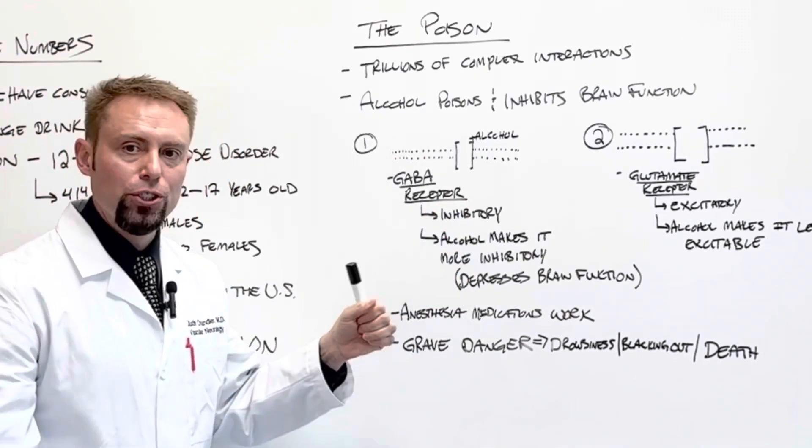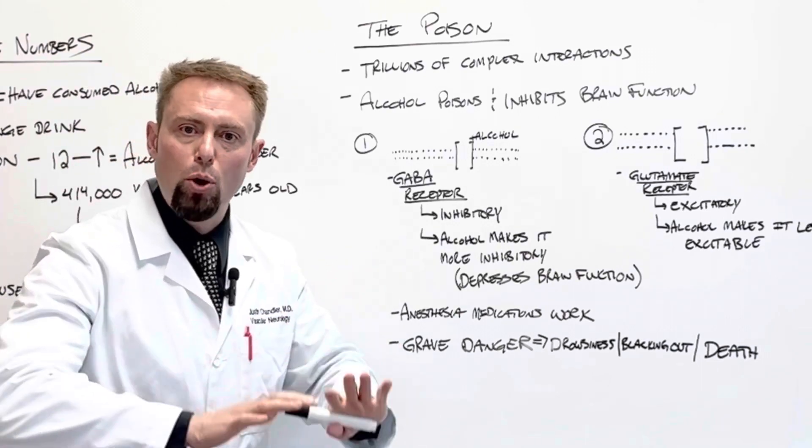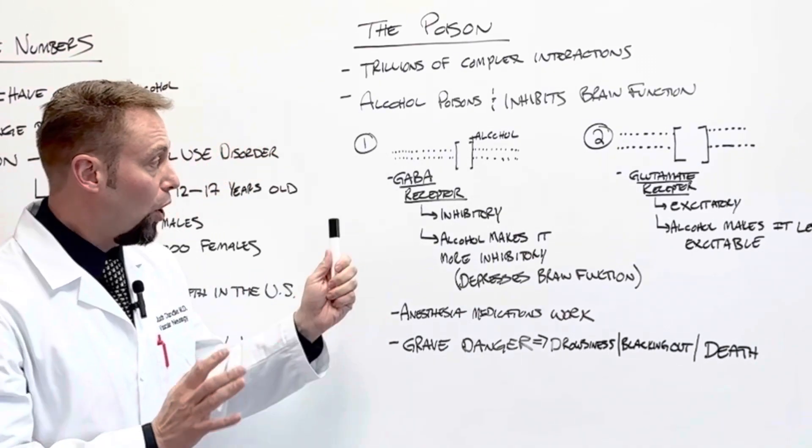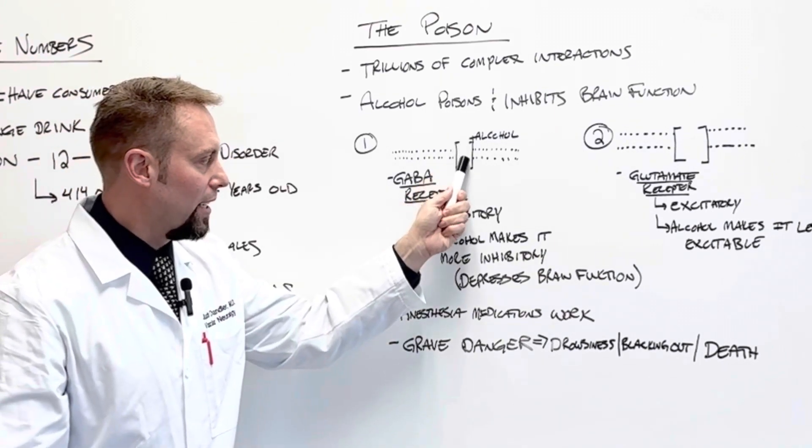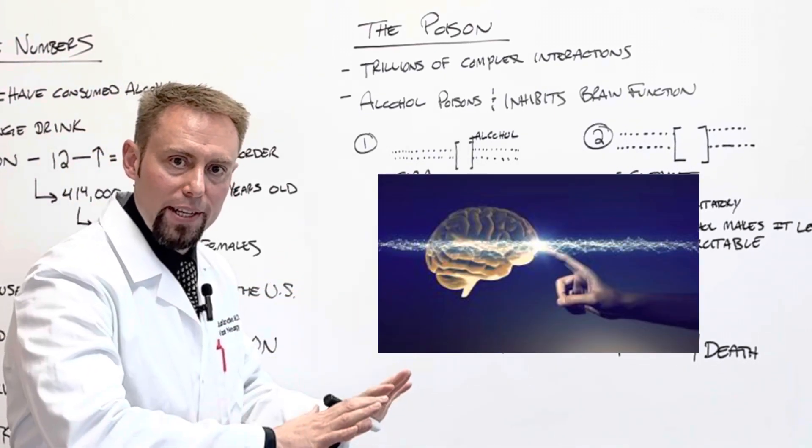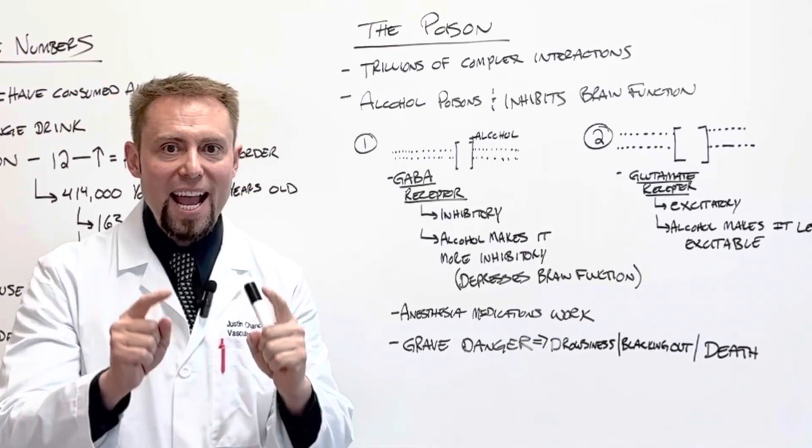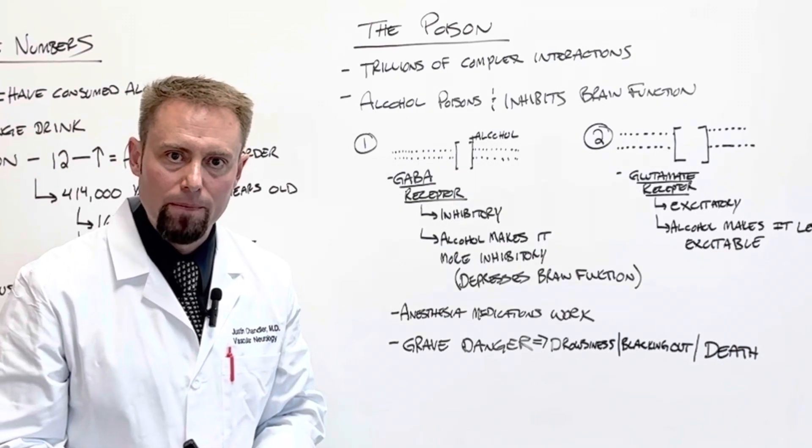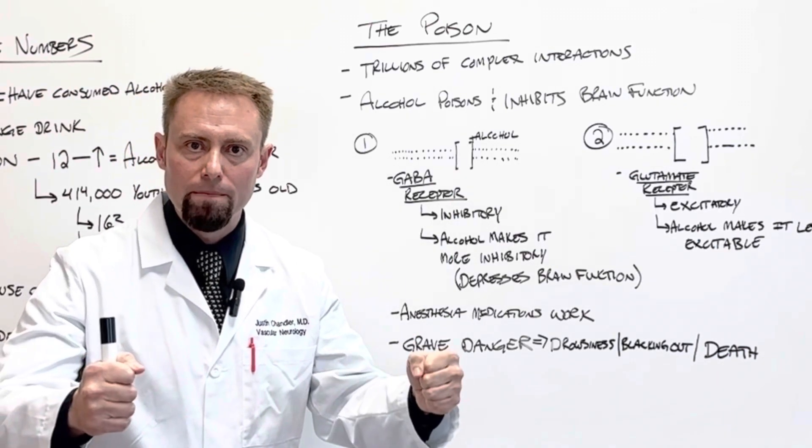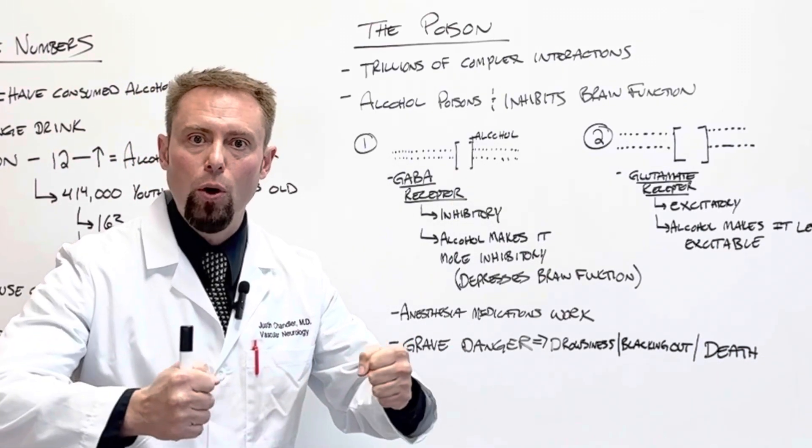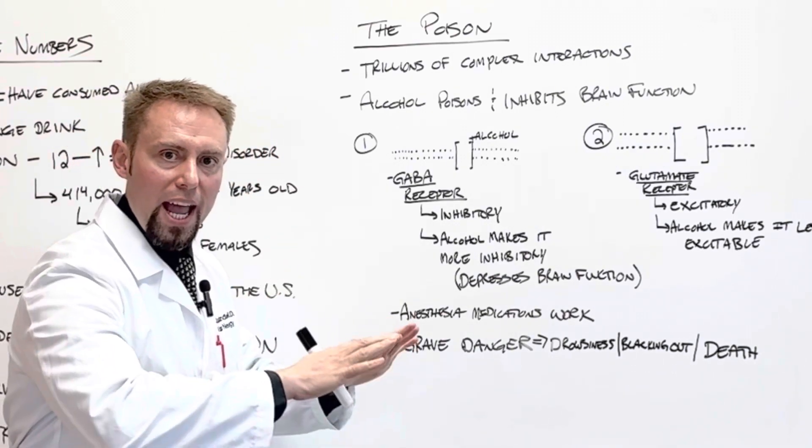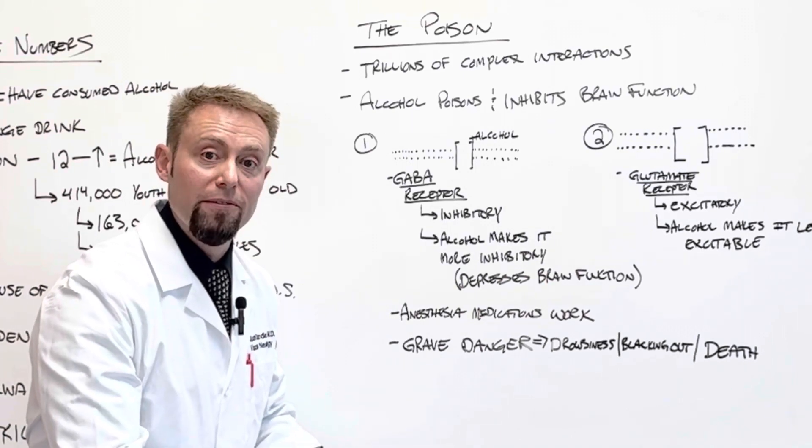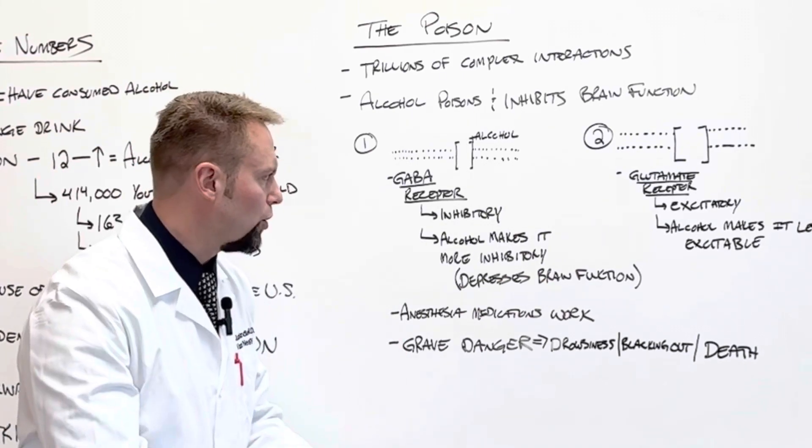The first type of receptor is something called a GABA receptor. What I mean by a receptor is if you have a membrane, you have a door in and out of this membrane. This door is the receptor. GABA receptors function to inhibit, to depress, to suppress what your brain function does. When a GABA receptor gets activated, it causes an inhibitory signal. Alcohol binds onto this GABA receptor, and it keeps the door open. In keeping that door open, you get more and more suppression, or inhibition, of brain function. It depresses your brain.